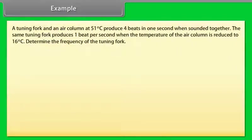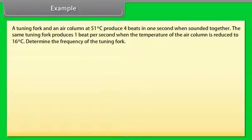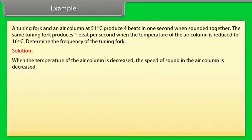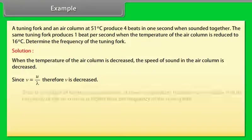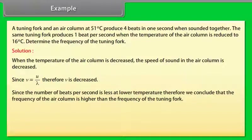Example: A tuning fork and an air column at 51°C produce 4 beats per second when sounded together. The same tuning fork produces 1 beat per second when the temperature of the air column is reduced to 16°C. Determine the frequency of the tuning fork. When the temperature of the air column is decreased, the speed of sound in the air column decreases. Since v = f × λ, the frequency decreases. Since the number of beats per second is less at lower temperature, we conclude that the frequency of the air column is higher than the frequency of the tuning fork.